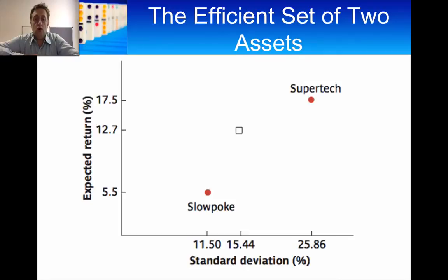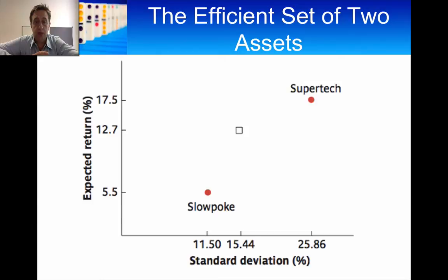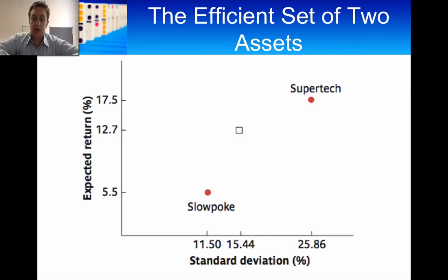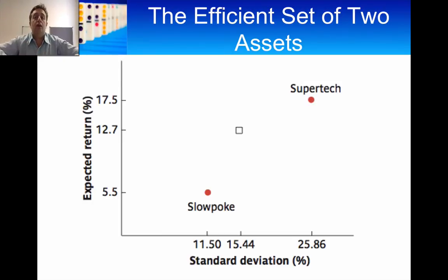Let's start off by carrying on with the examples in previous videos where we have two assets: Supertech and Slowpoke. Slowpoke has lower risk than Supertech. If you look at this graph, on the y-axis or the vertical axis you have expected return, and on the horizontal axis or the x-axis you have standard deviation. When you have a point which is to the left and lower down, that is lower risk because you've got lower standard deviation but also lower expected return. Going towards the right, you have higher standard deviation and higher expected return.